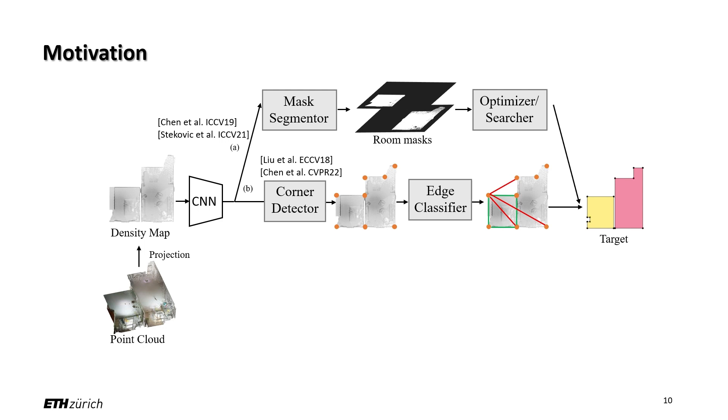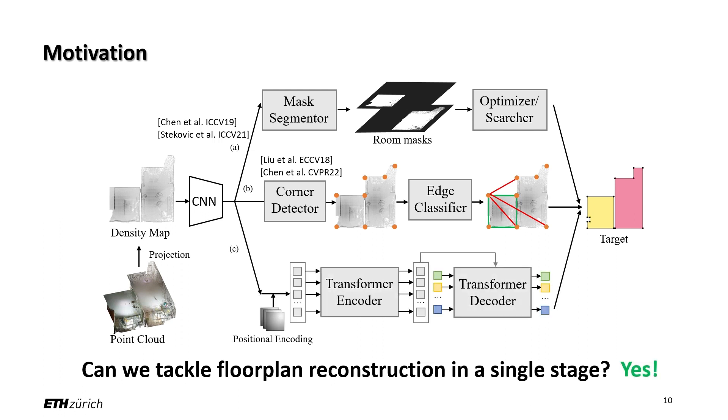Both methods are strictly multi-stage, so mistakes in the first stage, for example, misdetected rooms or corners, can cause an irreversible effect on the second stage. This motivates us to ask: can we tackle floor plan reconstruction in a single stage? To this end, we propose a transformer-based model which directly outputs a polygonal representation of all rooms in parallel.